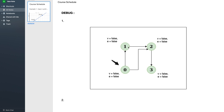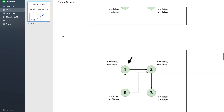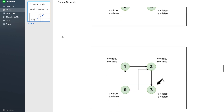For each vertex, visited and explored are marked false. We start DFS from vertex 0. We can move to vertex 1 or vertex 2, so we move to vertex 1 and mark it as visited. From vertex 1 we can only move to vertex 2, so we mark vertex 1 as visited and move to vertex 2. From vertex 2 we move to vertex 3 and mark it as visited. From vertex 3 there are no adjacent vertices.